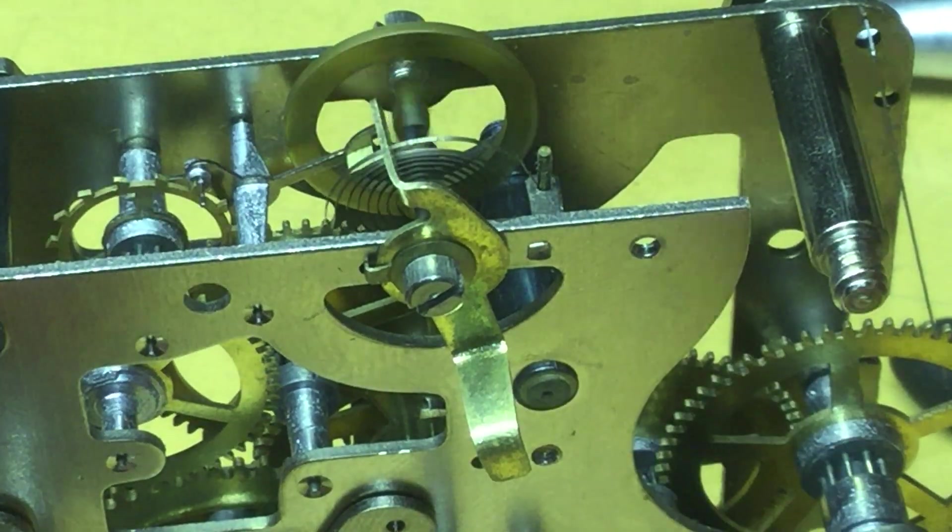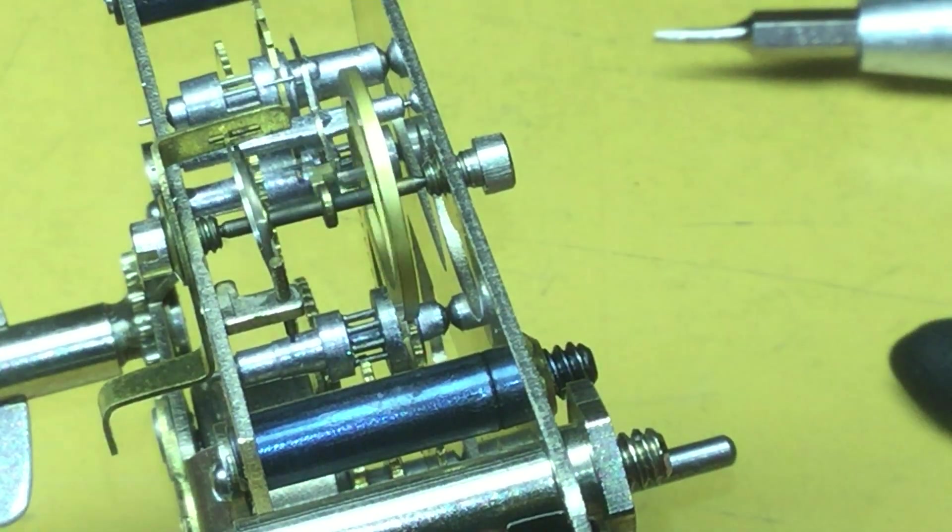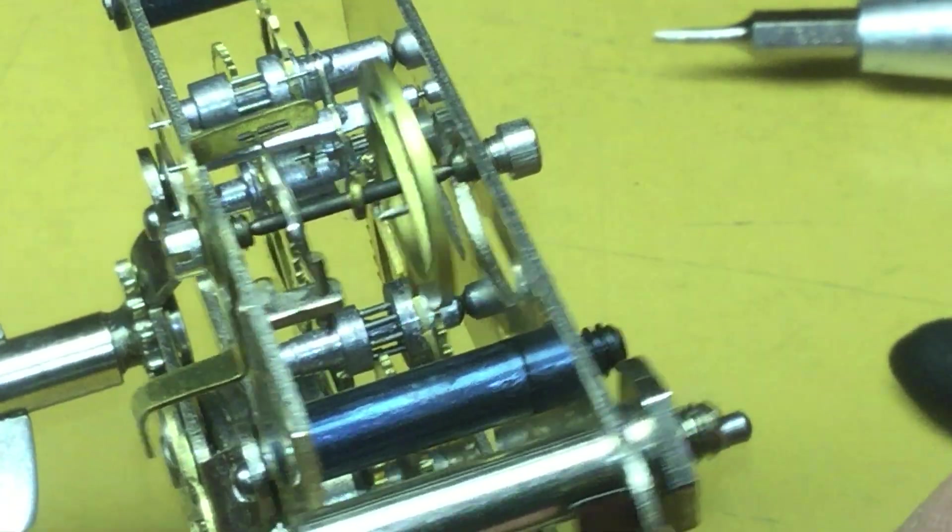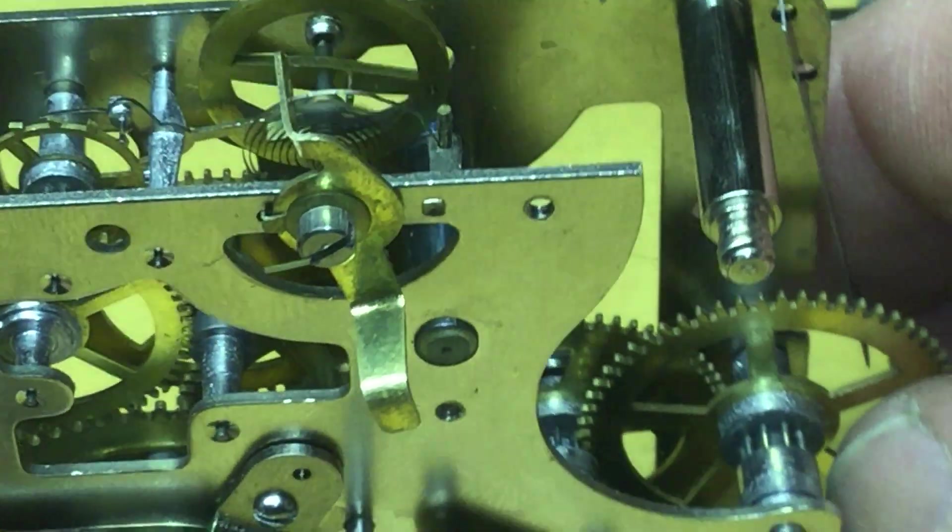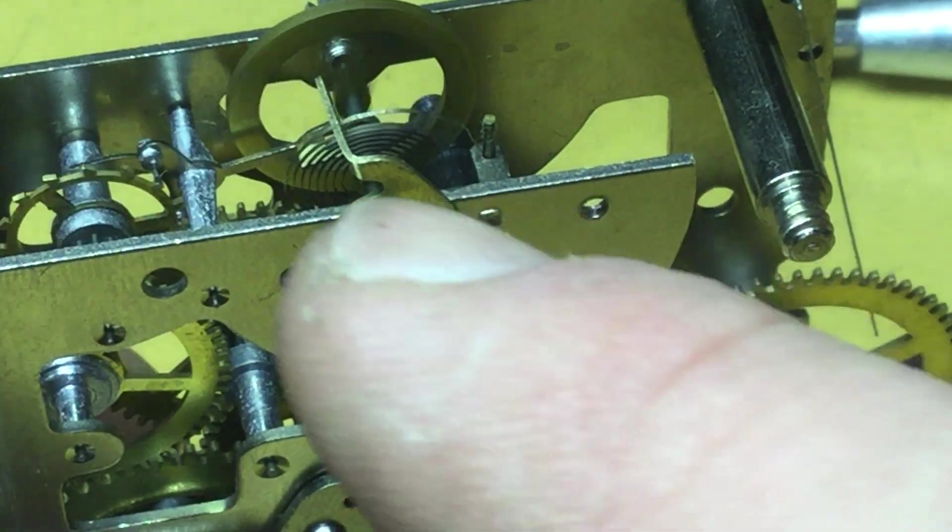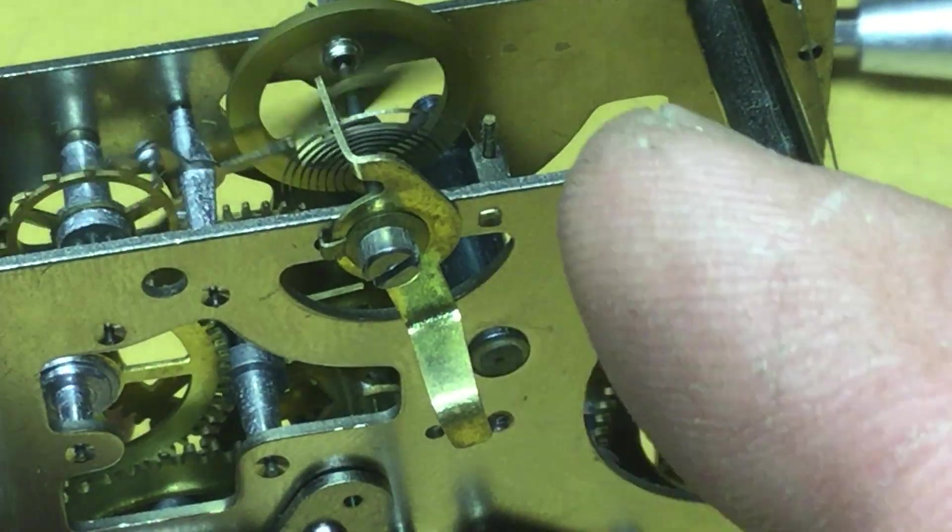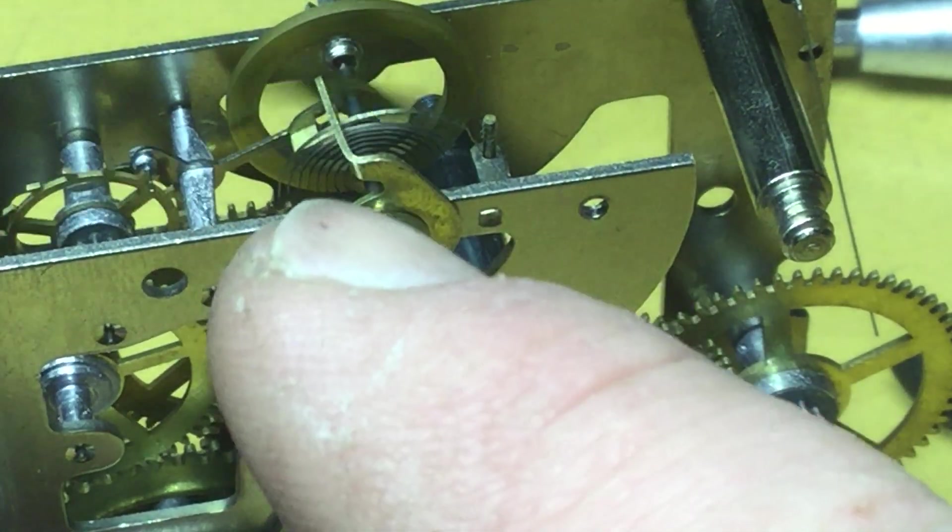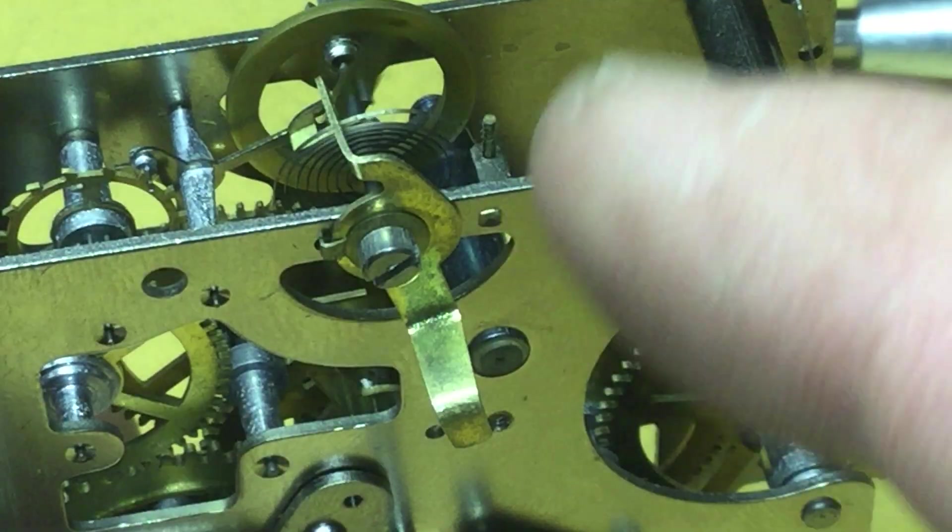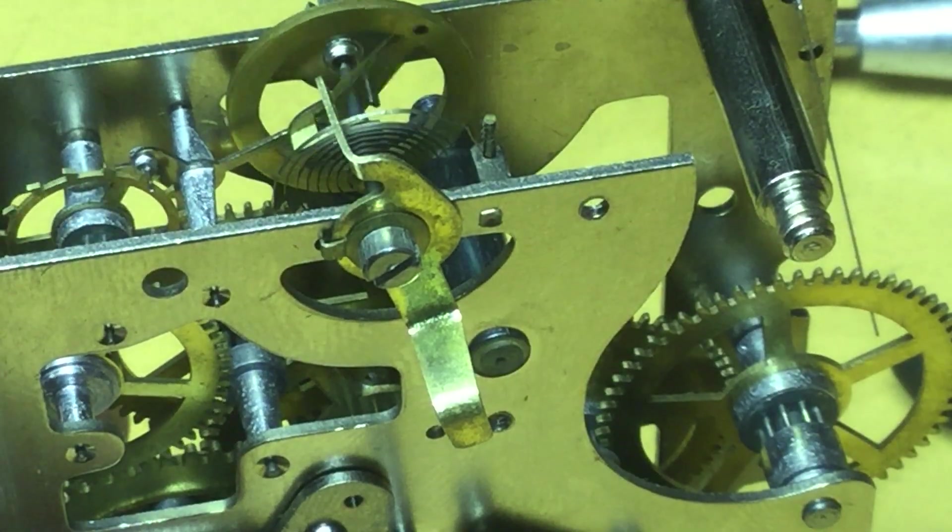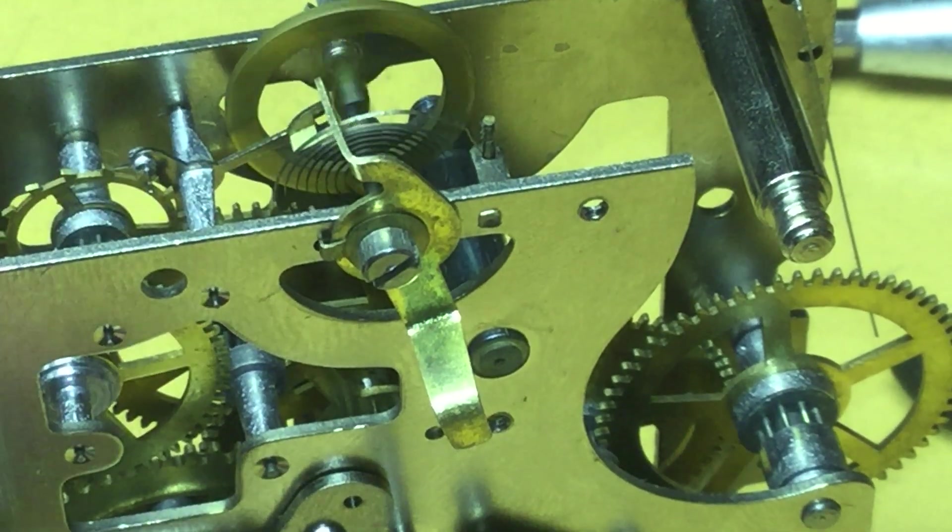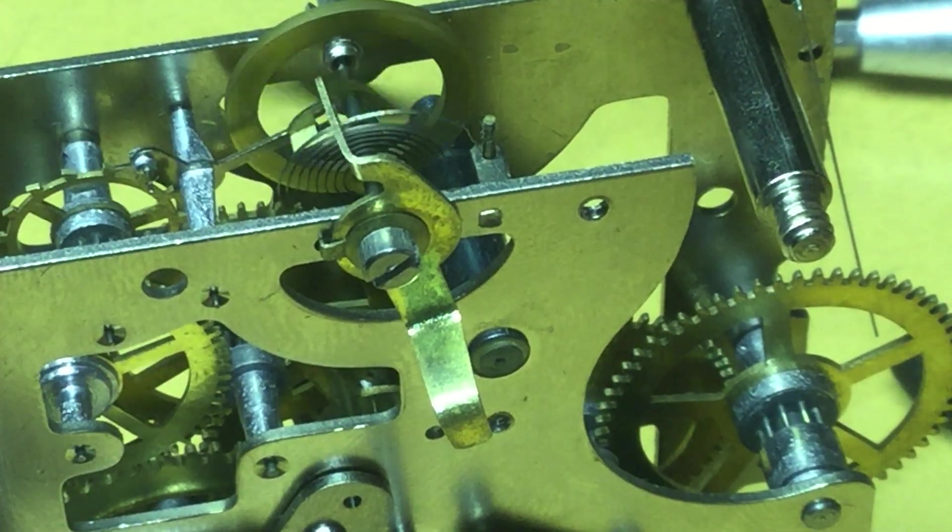Ideally, that hairspring, that outer coil of the hairspring, should follow an arc that's the same as the regulator, so that as the regulator moves back and forth, it does not change anything else on the spring.